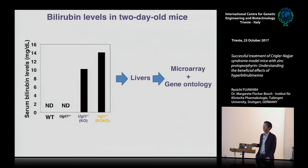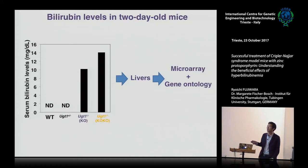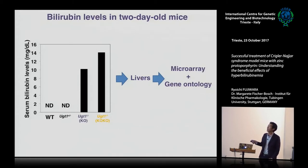Now we have four different mouse lines: wild-type mice, heterozygous mice with quite low bilirubin, UGT1 knockout mice born from heterozygous mice with high but not super-high bilirubin, and the same genetic background UGT1 knockout mice born from knockout mice — which we call knockout-knockout mice — with super, super high bilirubin. With these four different mouse lines, we can understand what bilirubin is doing in the body. So we focused on the livers, isolated them, and ran microarrays to understand what is going on in the liver.